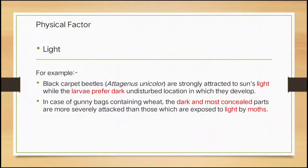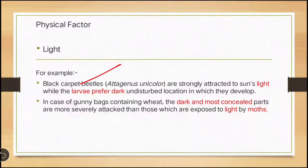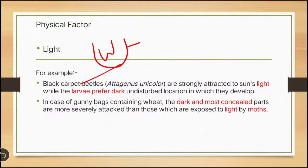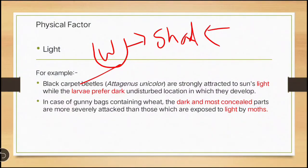Now we will discuss the physical factor — light. The black carpet beetle adult is attracted to strong sunlight, whereas the larva of this beetle is attracted towards dark. So the larva and adult prefer different light conditions during their growth. If you are storing wheat in a gunny bag and keeping it in shade, more insects will be attracted to it. But if you keep the same gunny bag in sunlight, insects will not be attracted as much.